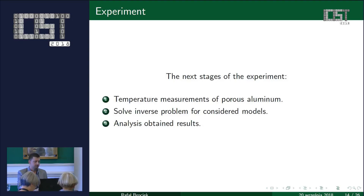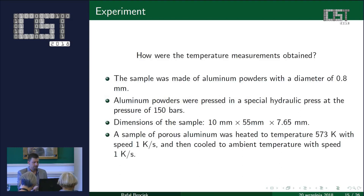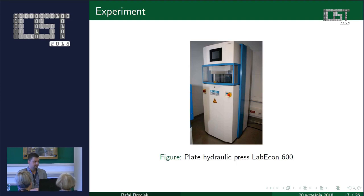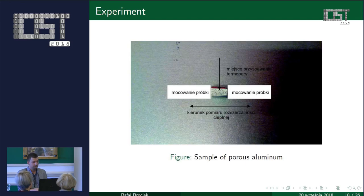How was the sample made? The sample was made of aluminum powders, which were pressed in a special hydraulic press. The sample of porous aluminum was heated to a temperature of 573 Kelvins and then cooled to ambient temperature. We used a special plate hydraulic press and a K-type thermocouple.